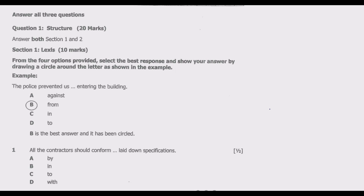As shown in the example: 'The police prevented us ___ entering the building.' The options are A: against, B: from, C: in, D: to. B is the best answer and it has been circled in that manner. So let us look at question one.